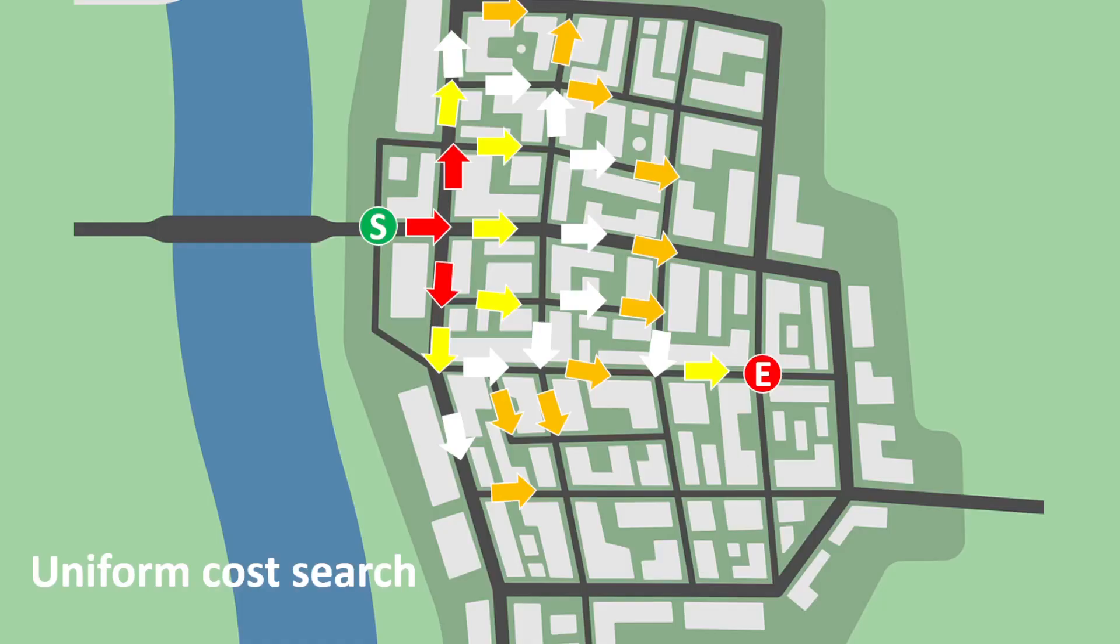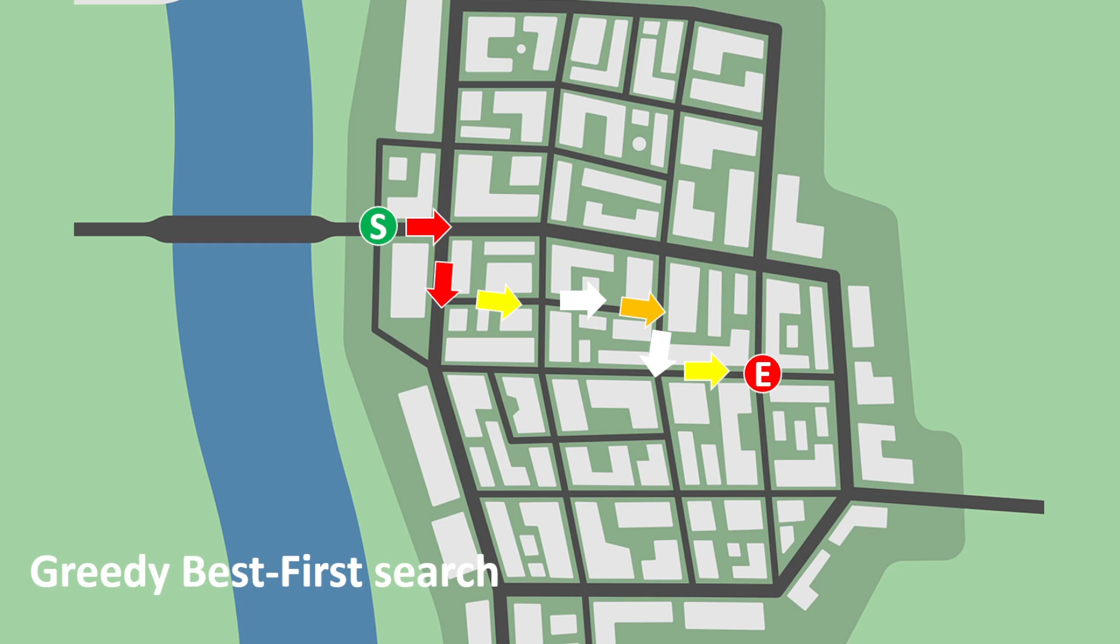So in summary, the uniform cost search is great for finding the cost to all of the nodes, and eventually we'll find our goal. But if we just want to find our goal and we want to find a reasonably cheap path, then maybe we would prefer to use the greedy best-first search.